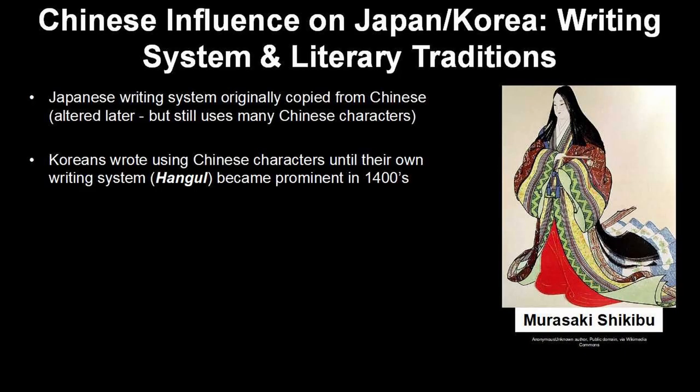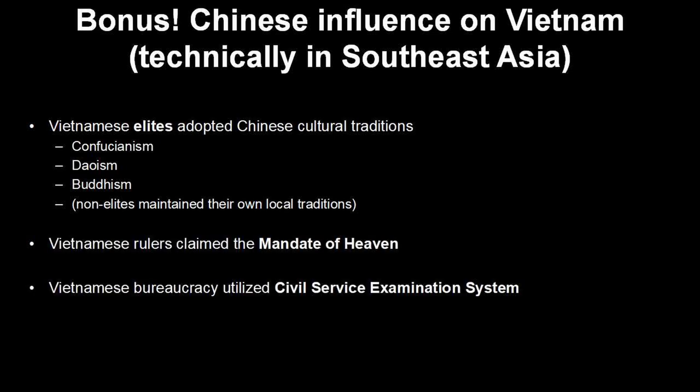Koreans also used Chinese characters in their writing during this time, and it wasn't until about the 1400s that their own writing system, Hangul, became more prevalent. The Japanese also developed their own writing system, but to this day it still includes many Chinese characters. Both Korea, Japan, and many other states were attracted by Chinese power, wealth, and cultural achievements. Think of China like the sun that all the other states in East Asia revolved around. Much of this was related to the tribute trade system, which we'll talk about in the economics section. Vietnam in Southeast Asia was also extremely influenced by China — Vietnamese elites adopted Confucianism, Daoism, and Buddhism, had a civil service examination system, and their rulers claimed the mandate of heaven.